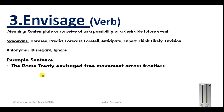The third word is 'envisage.' Envisage means to envision, foresee, or predict — to tell something about the future. Synonyms are: foretell, forecast, anticipate, expect, think likely, and envision. If you do not anticipate something, you disregard or ignore it, so the antonyms for envisage are disregard and ignore.